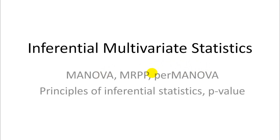I would recommend always using these distance-based approaches. They are really your only option for high-dimensionality data — so if you have lots of variables, these are the only ones that work. And these permutational multivariate analysis of variance approaches are also nonparametric, so you don't have to worry about assumptions of normality and homogeneity of variances.